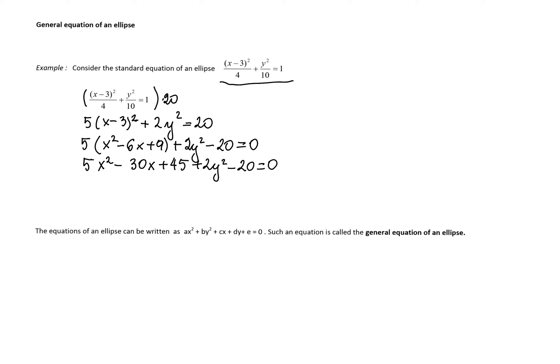We subtract 20 from both sides to get 0 on the right hand side. Distributing 5 gives 5x² - 30x + 45 + 2y² - 20 = 0.